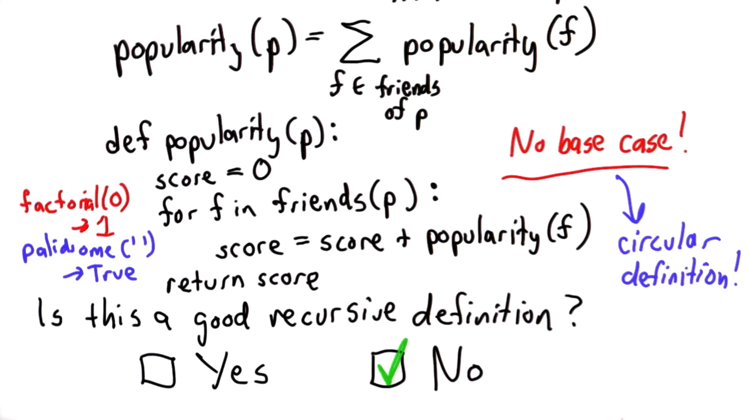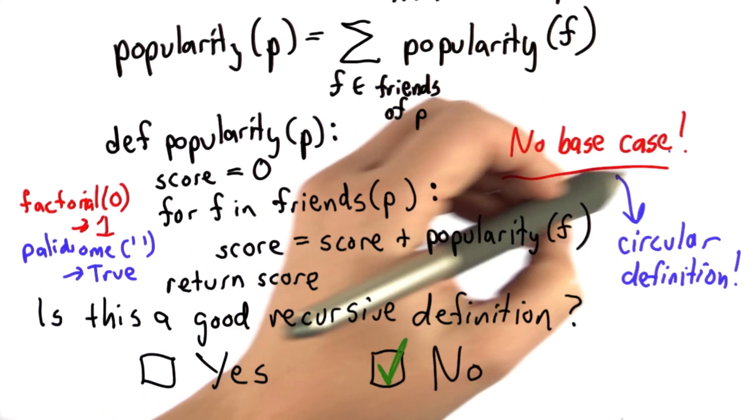And we did this for Fibonacci, where we had two base cases. But for all these definitions, we had some starting point that was not defined in terms of the thing we're defining. And that's why it was a good recursive definition, because we had the base case.